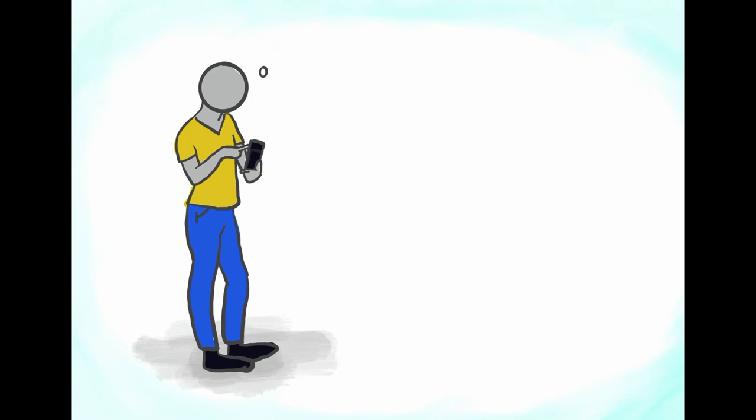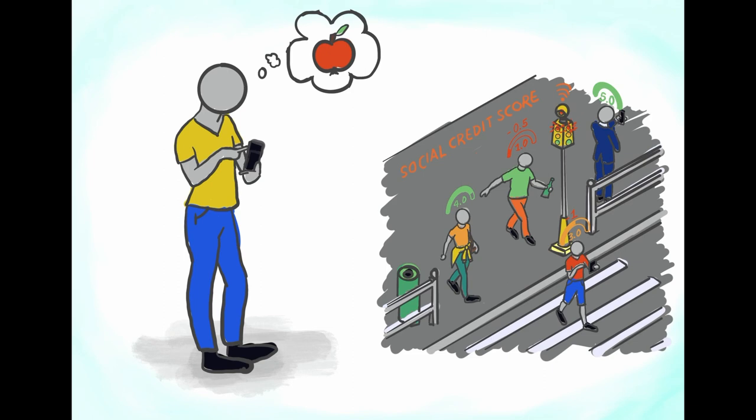Data is used to control and survey things. That can be harmless like a person using the data from its Fitbit to lose weight. But it can also happen that a state is surveilling its citizens and punish them if they do something wrong, like for example in China with a social credit system.